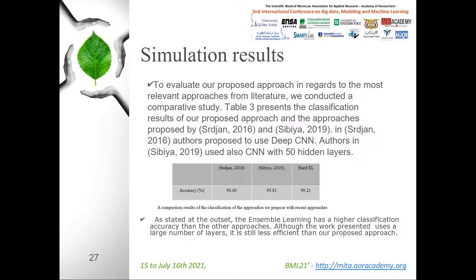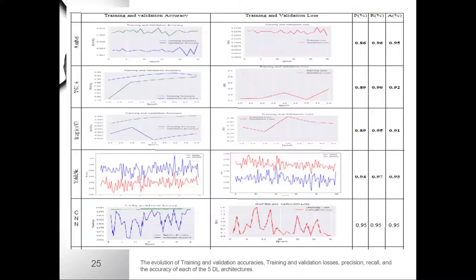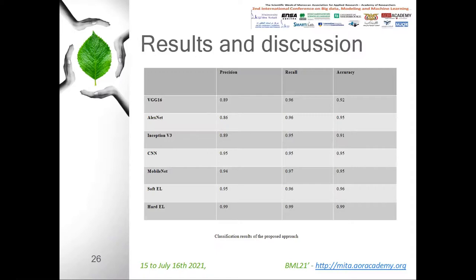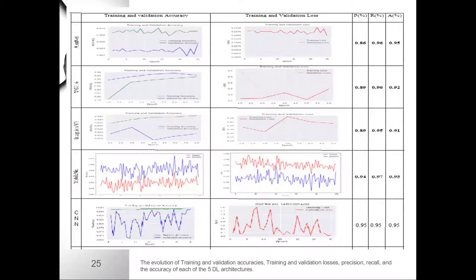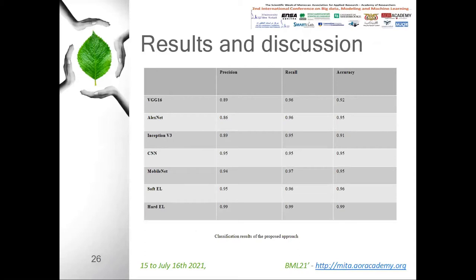We noticed from the classification results that each of the five architectures has different behavior with different values of precision, recall, and accuracy. The Inception V3 architecture had the lowest values in terms of accuracy, followed by AlexNet. The AlexNet, CNN, and MobileNet architectures had the same accuracy score, but in terms of recall, the MobileNet architecture performed the best. However, the proposed ensemble learning approaches significantly improved the classification results, especially using the hard technique with a value equal to 0.99. We can say that the use of votes from the five architectures allowed us to achieve almost 100% classification rate.